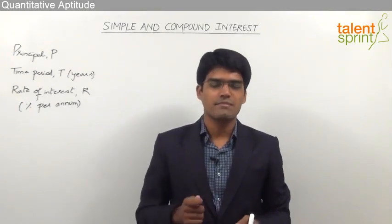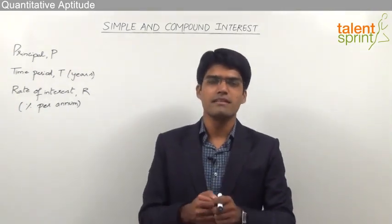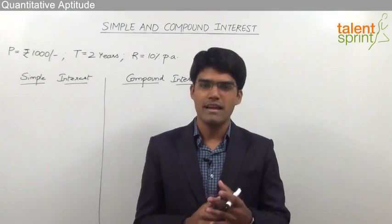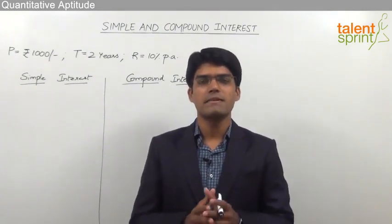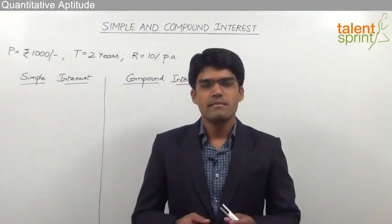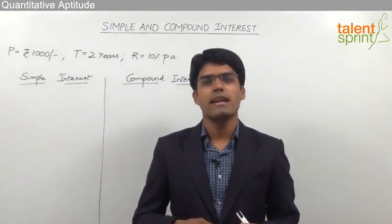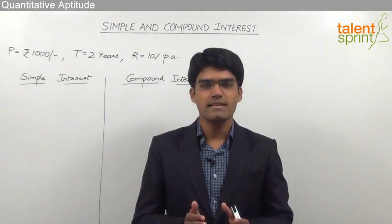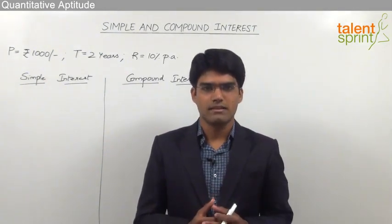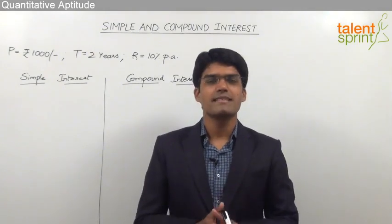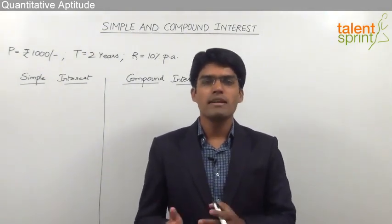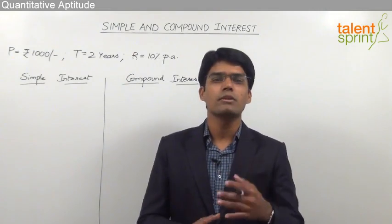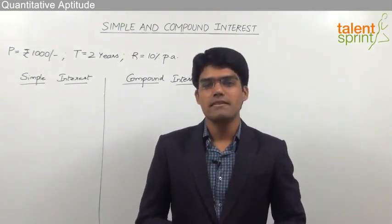Based on the three values — principal, time period, and rate of interest — simple interest and compound interest can be calculated. Simple interest is a case in which the interest is paid at the end of every period. For example, if interest is calculated on a yearly basis, it is paid at the end of every year as and when it falls due. Compound interest, on the other hand, is a case in which the interest is not paid at the end of every period but instead gets added to the principal amount. That is the major difference between simple interest and compound interest.